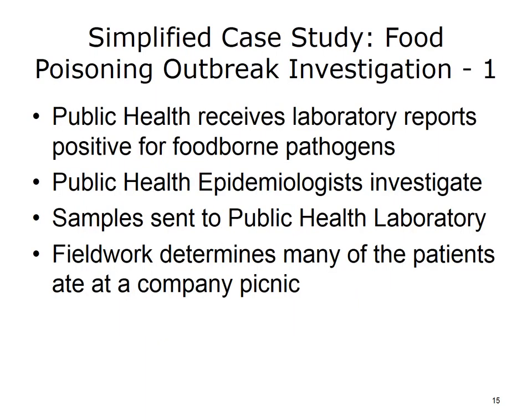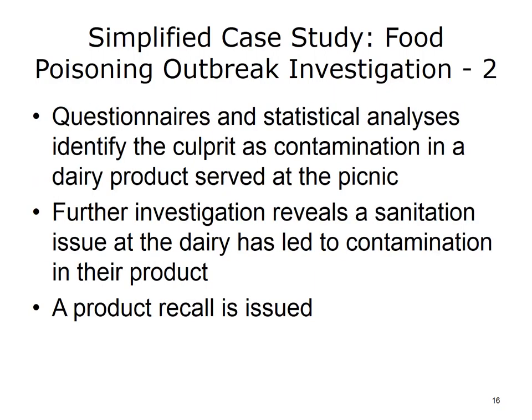Outbreak investigations can take many forms and be quite complex. This slide illustrates a fictional and very simplified outbreak investigation of a food poisoning incident. In our fictional example, public health first learns about the incident by receipt of laboratory reports positive for food-borne pathogens. Epidemiologists investigate the report, sending additional samples to the public health laboratory to be more closely identified. The epidemiologists trace the illness to a company picnic, and questionnaires are sent to those who are ill.